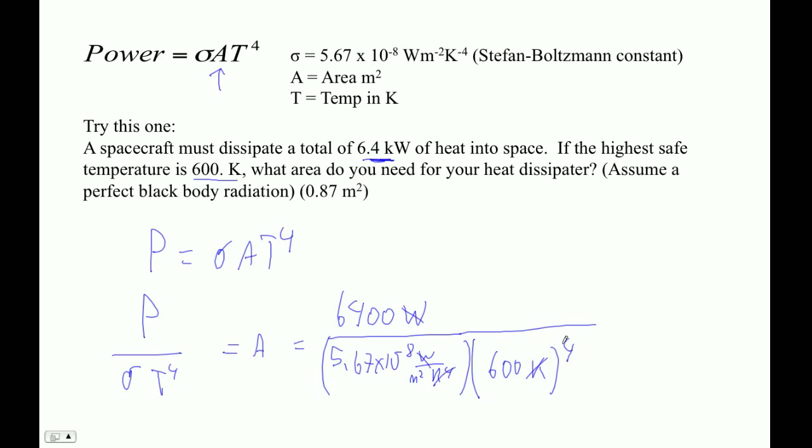So 6400 divided by 5.67 e minus 8 divided by 600 raised to the fourth power, and you get 0.87 square meters.